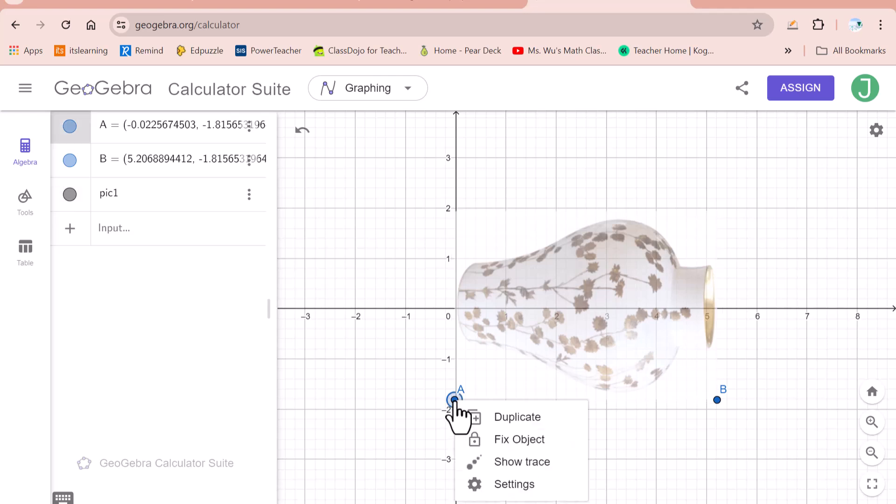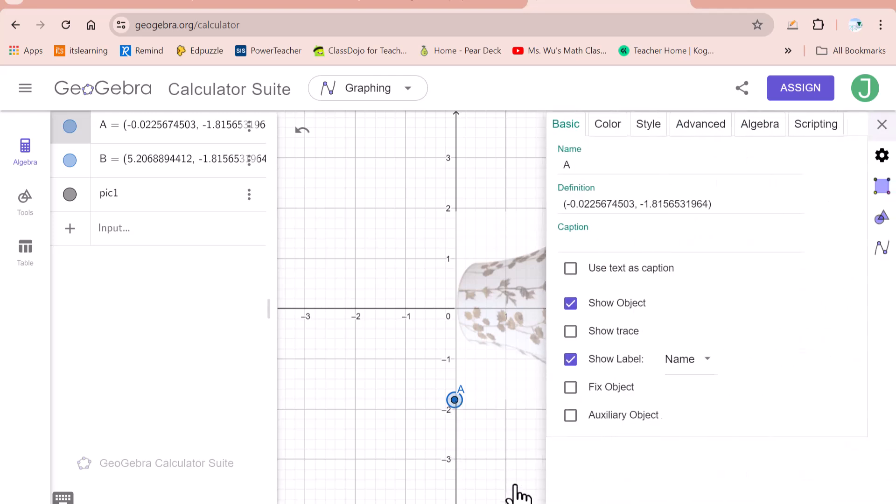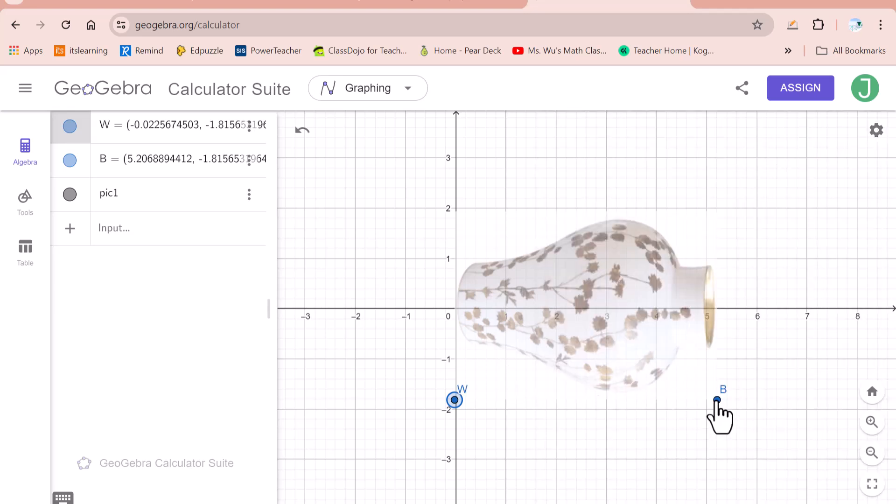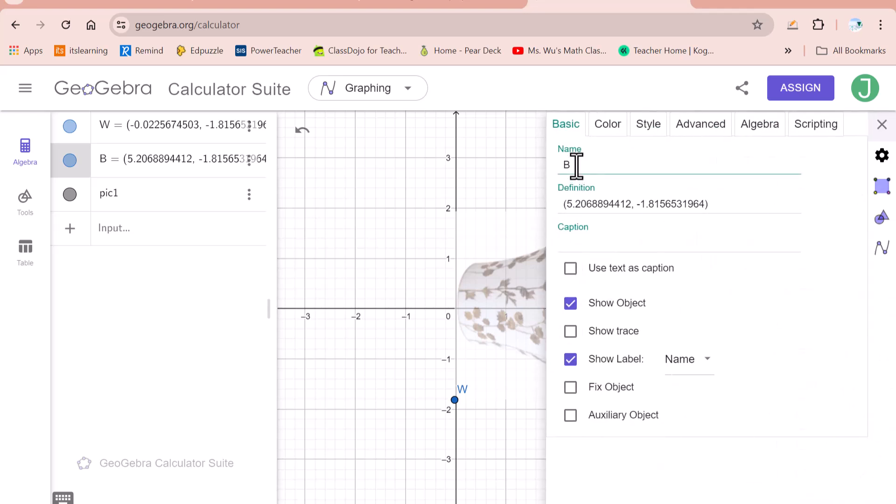Right click on this point. Click on setting. You can change the name of this alphabet letter. For example, I will do W. Then right click this B setting. Change this into V.